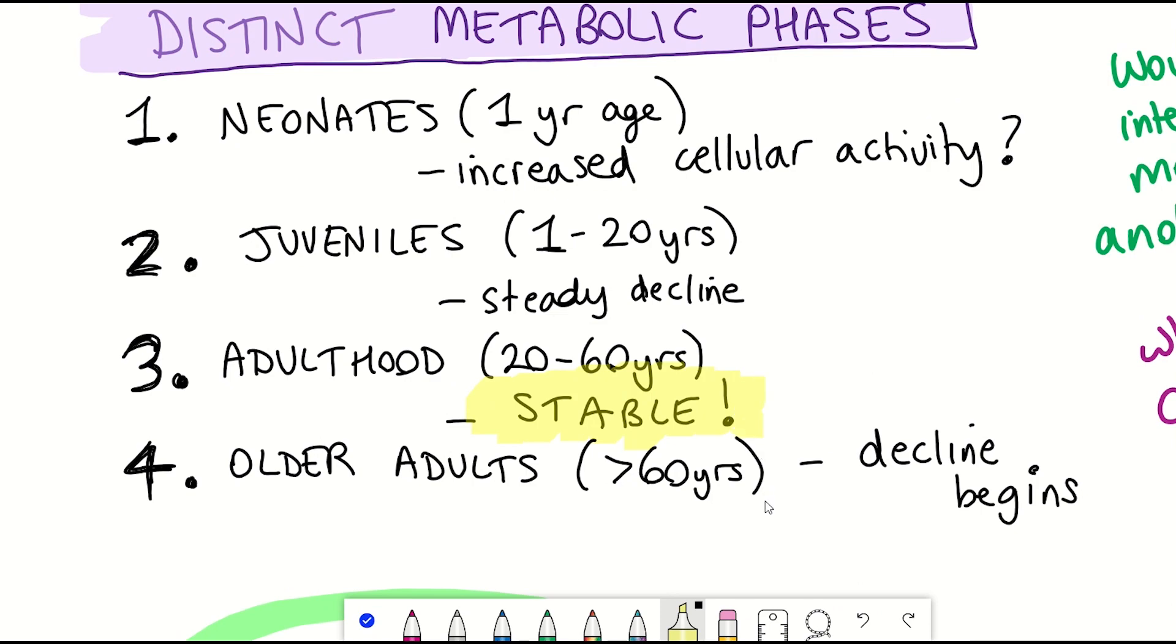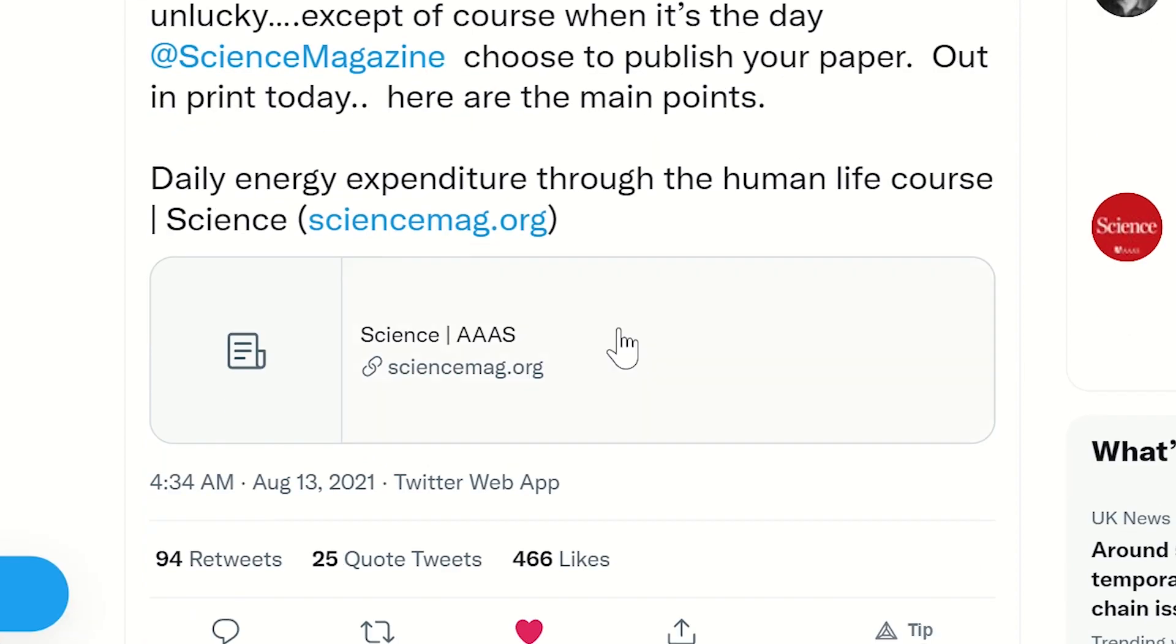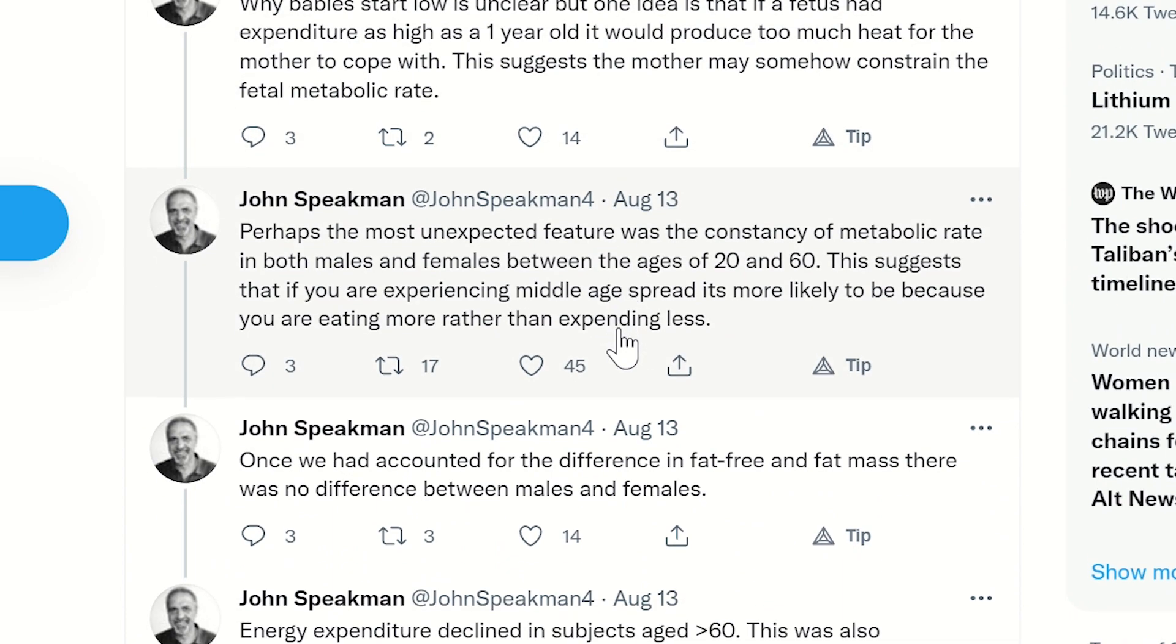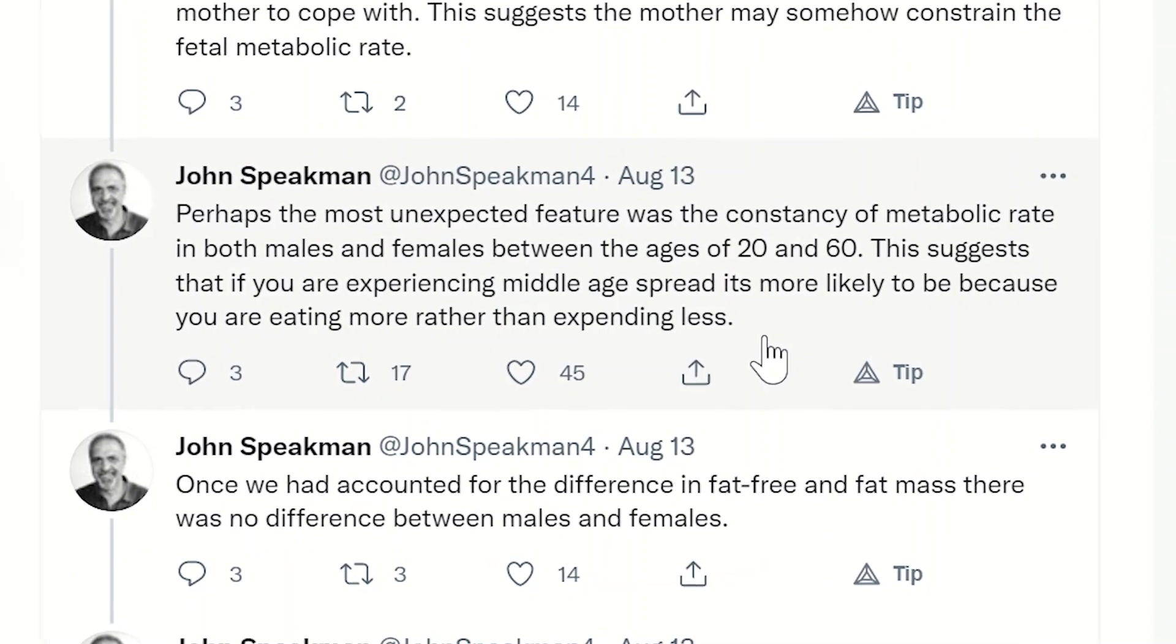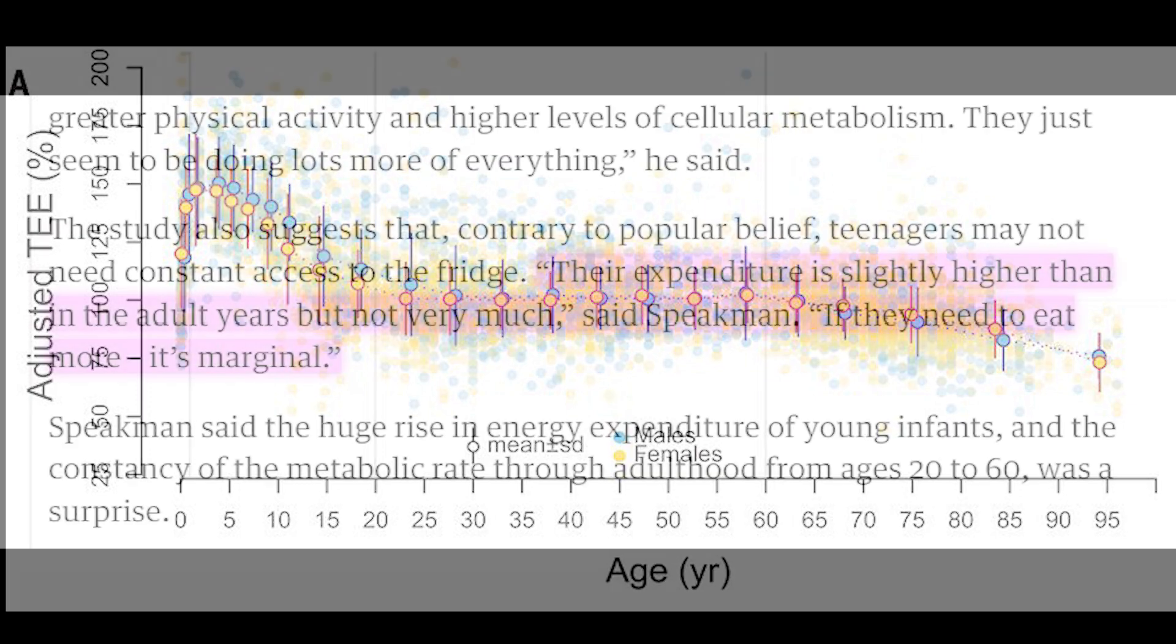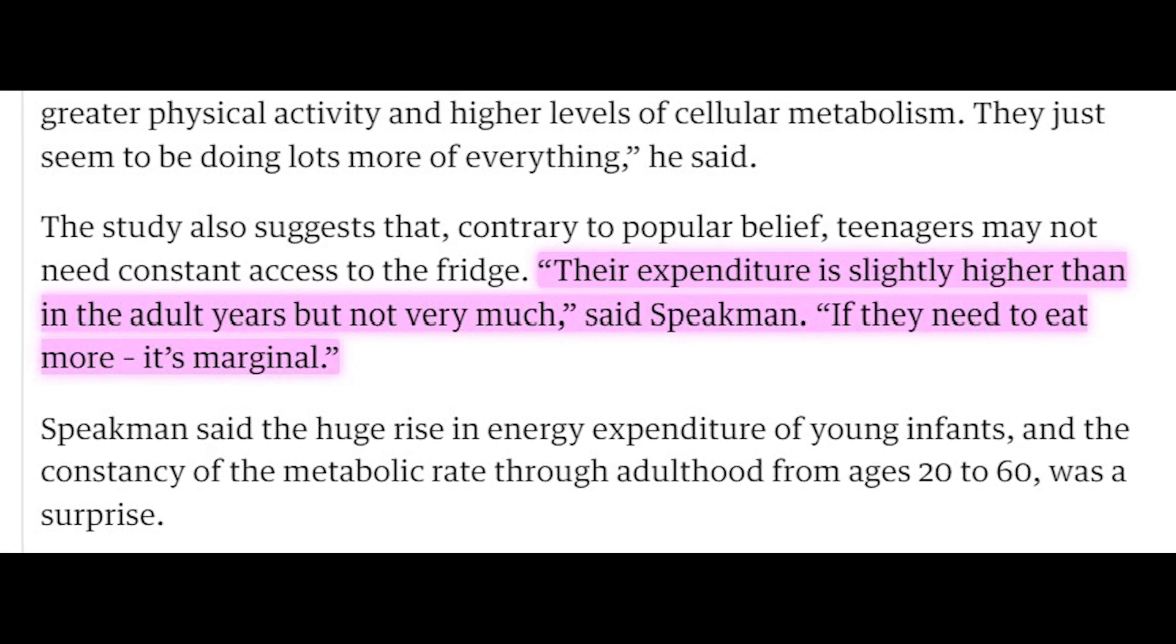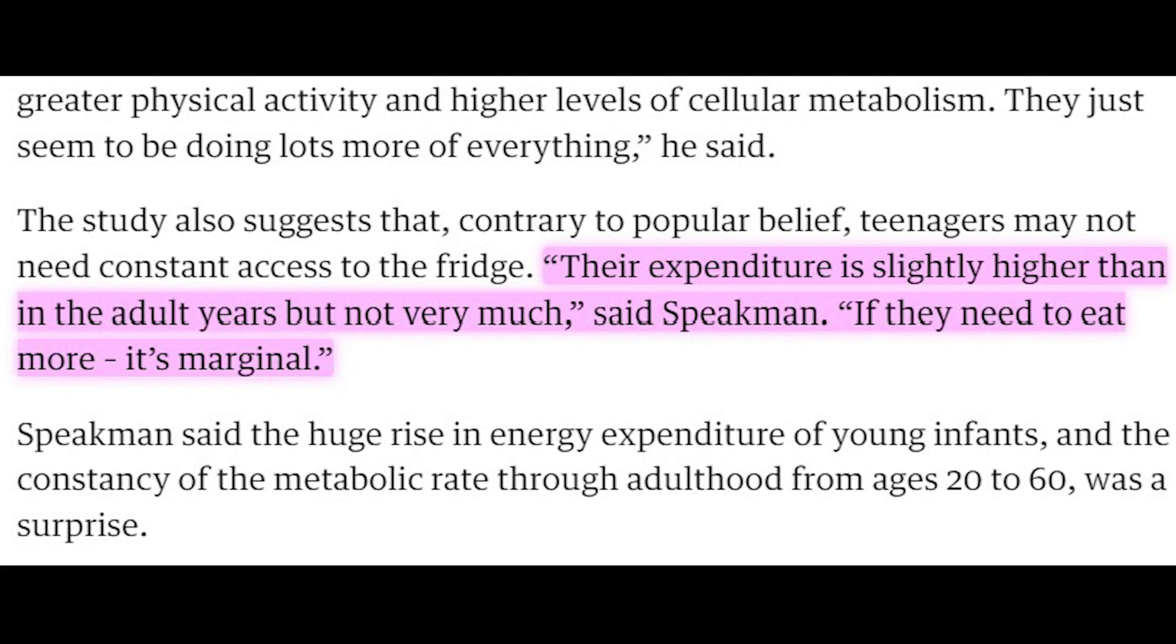And so the other surprising finding from this study is the fact that between the ages of 20 to 60, the energy consumption rates is pretty consistent, which as John Speakman, one of the lead authors on this paper comments on Twitter, it suggests that if you are experiencing middle age spread, it's more likely to be because you are eating more rather than expending less. And looking at the earlier phase, whereby you see a decline in energy expenditure from the peak at age one to age 20, it also suggests that teenagers don't need to be eating so much. As John is quoted to say in this news article, their expenditure is slightly higher than in the adult years, but not very much. If they need to eat more, it's marginal.